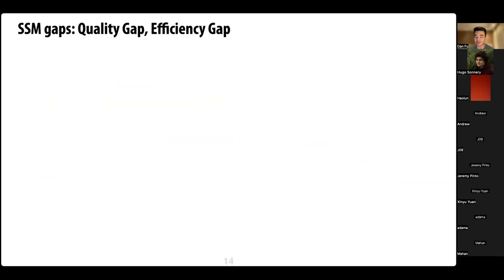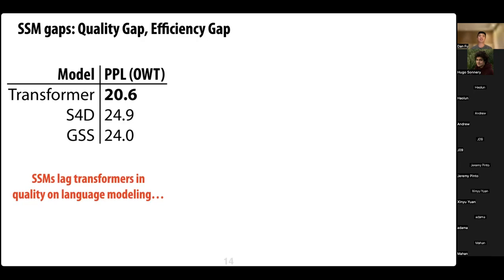This wouldn't be a machine learning talk if the answer were just yes. When you use state space models out of the box, there are quality and efficiency gaps. Taking two state-of-the-art SSMs — S4D and GSS — and replacing attention, you see a pretty big quality gap on language modeling: four to five perplexity points on OpenWebText. At that scale, five perplexity points is roughly the difference between a 125M parameter model and one ten times bigger.